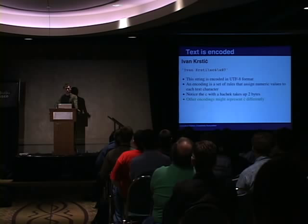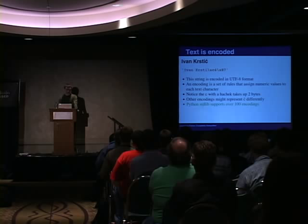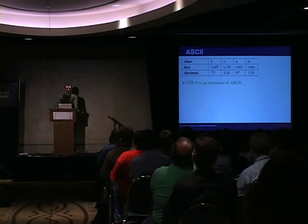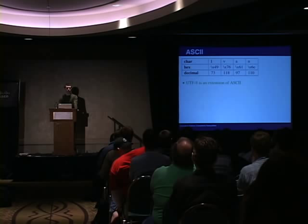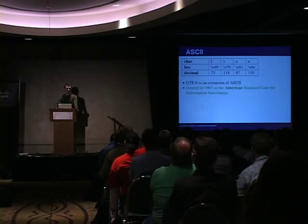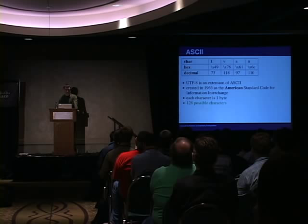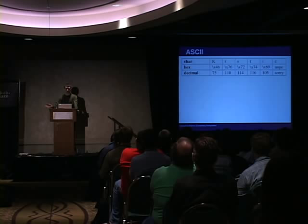Python out of the box supports over a hundred different types of encodings. UTF-8 is just an extension of ASCII. Here I made a chart of the first word showing how each letter maps to bytes. ASCII was created quite a long time ago as the American Standard Code for Information Interchange. Each character is one byte and there are 128 possibilities. So getting to the second word, we can only make it as far as the C with a hatchet — Croatian was not really important when they created ASCII. That's the problem.